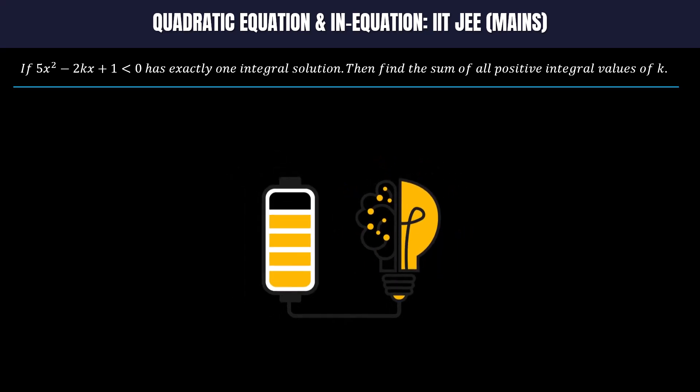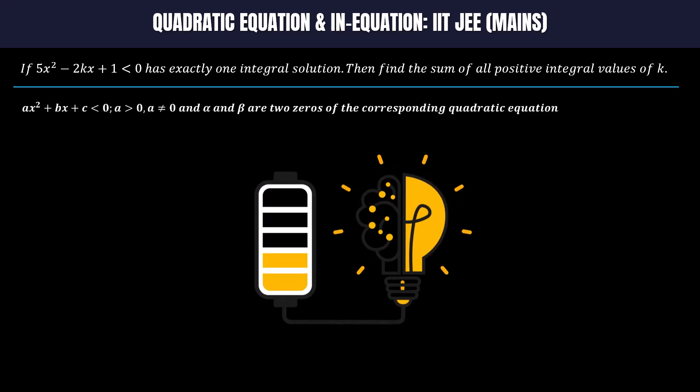Before solving this problem, I would like to present what is the meaning of exactly one integral solution of quadratic inequality ax² + bx + c < 0, where a is a positive real number and α and β are the roots of the corresponding quadratic equation ax² + bx + c = 0.